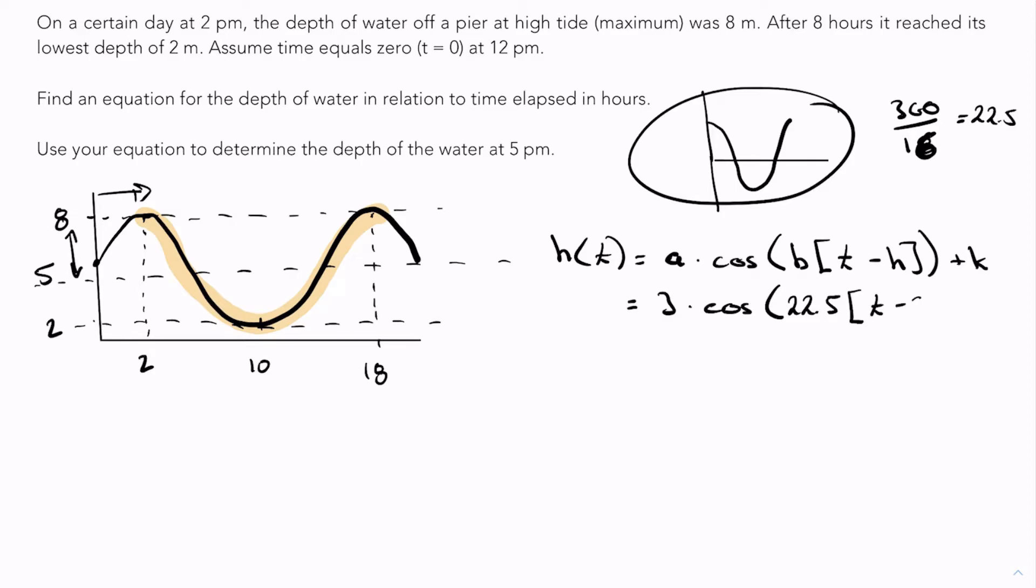And then t minus 2 because we're shifting over 2 units, plus the middle which is 5 because we move the middle up 5 units from the base. So our height is given by that equation.